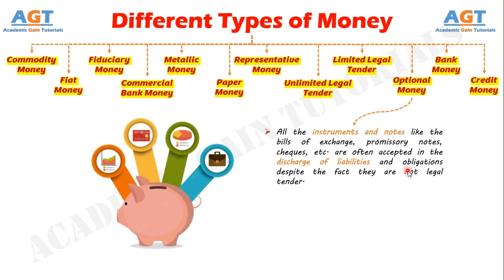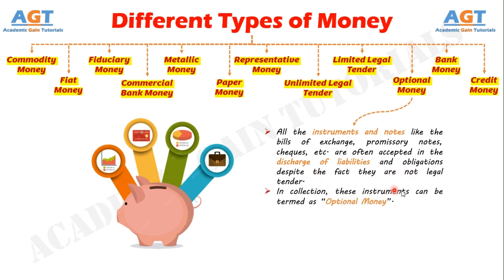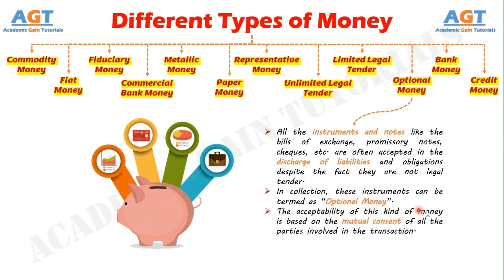Number 10: Optional Money. All the instruments and notes like the bills of exchange, promissory notes, cheques, etc. are often accepted in the discharge of liabilities and obligations despite the fact they are not legal tender. These instruments can be termed as optional money. The acceptability of this kind of money is based on the mutual consent of all the parties involved in the transaction.